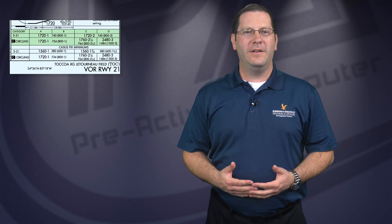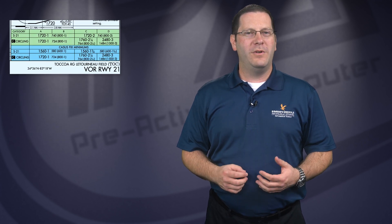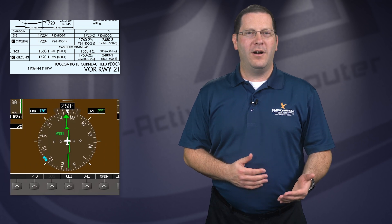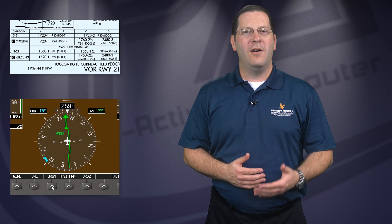Another thing to note about this approach is the minimums section. There are two different straight-in minimums depicted. Which one you should use depends on whether or not the aircraft can identify the Caches fix. You can show the distance from the VOR on the G1000 by pulling up the bearing point information on the PFD or by loading the approach on the G1000. This means we can identify the fix and therefore utilize the lower minimums. For the runway 21 straight-in approach, the minimums are 1,560 feet MSL and 1 statute mile visibility.